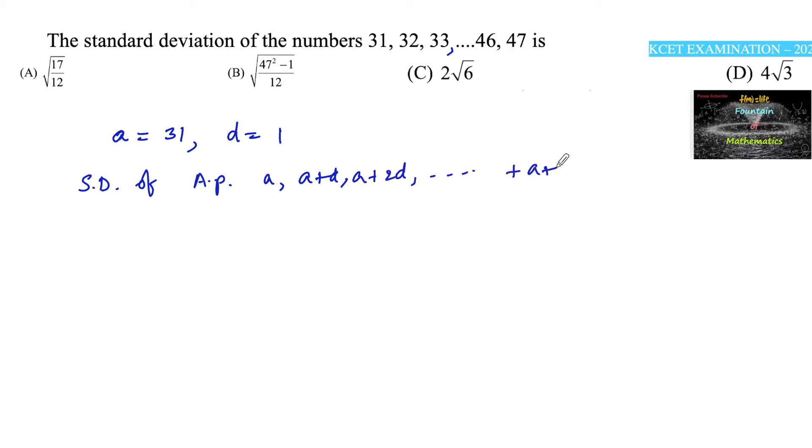a plus (n minus 1) times d is given by root over n squared minus 1 upon 12 into d,